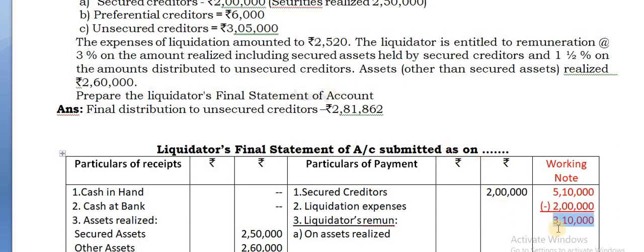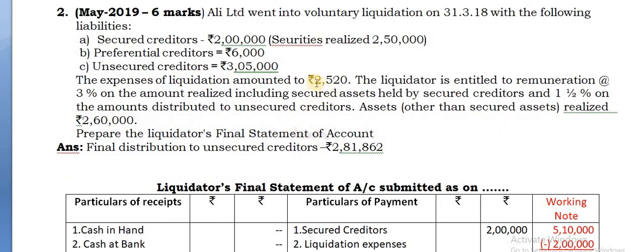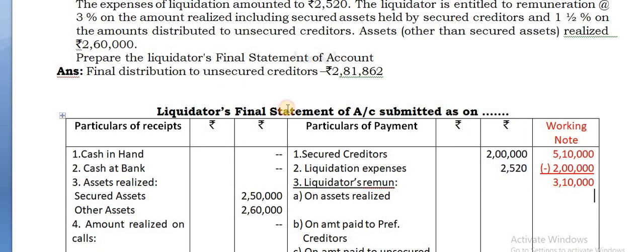Balance you have 3,10,000. Liquidation expenses is given as 2,520 - take the same 2,520 and deduct from here. Next balance you have 3,07,480.